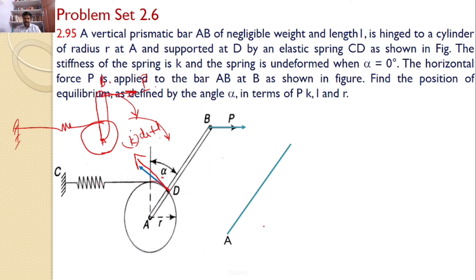By considering the free body diagram AB where A makes an angle alpha as mentioned, there is a spring force of magnitude K R into alpha. How much is this distance? This is the radius R. And here, there is a force P whose length is here.